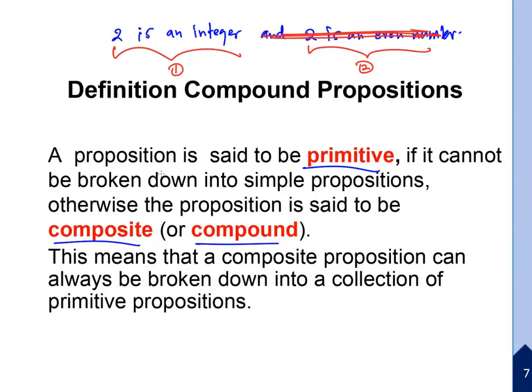The first part is called primitive, and combining primitives gives us a composite proposition. Thank you.